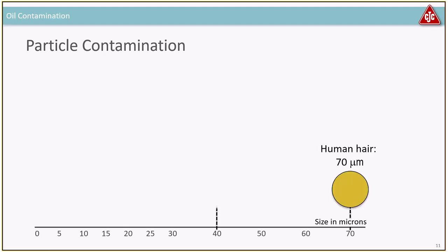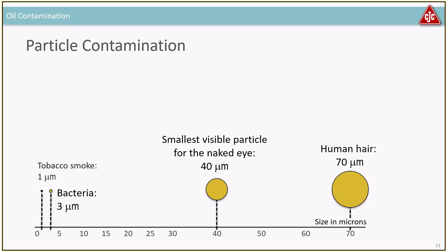The three main contamination types we'll look at: first, particles. The problem with particles is that you cannot see the ones that are harmful. The diameter of a human hair is around 70 microns — a micron is one thousandth of a millimeter. A dust particle is roughly 40 microns. In oil you can only see a particle of 100–150 microns or bigger. The majority of harmful particles are actually in the region of 1 micron (tobacco smoke size) or 3 microns (bacteria size).